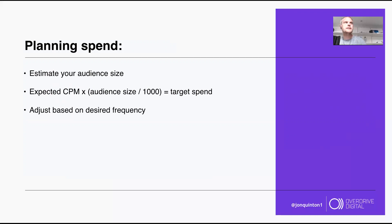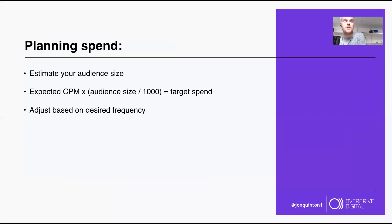Planning spend is a big consideration because audience sizes tend to be small — there's only a certain amount you can spend before you start over-saturating. Work out the expected audience size, look at the expected CPM, and you can estimate how much you may be able to spend. That's a really good thing to look at first.